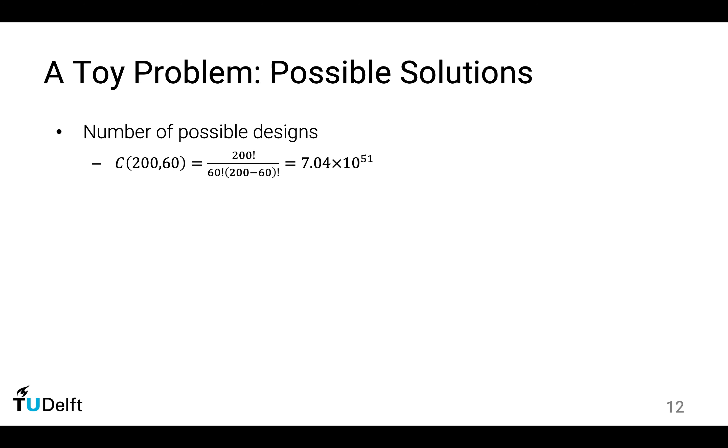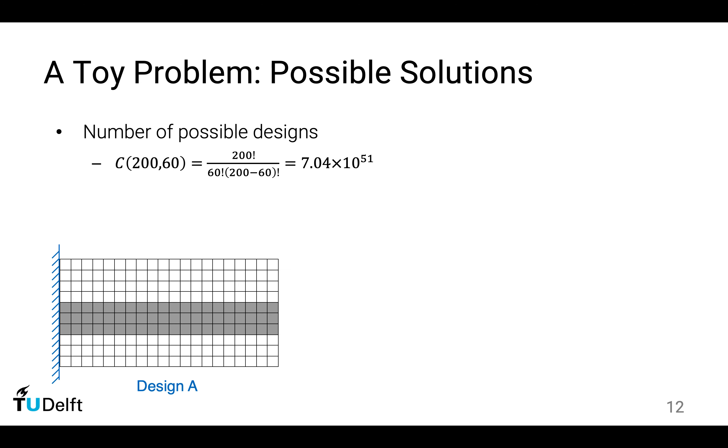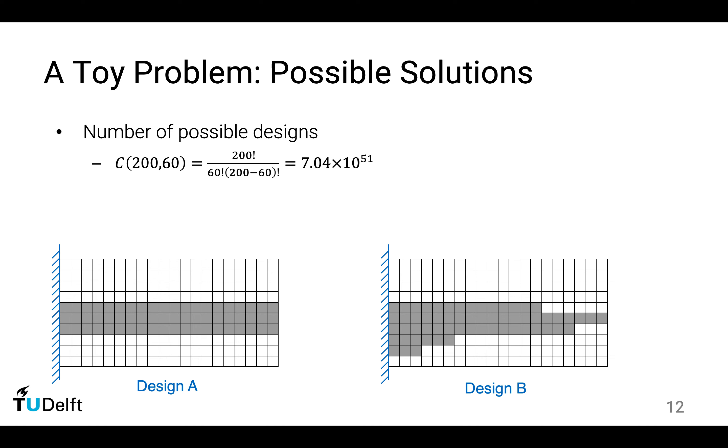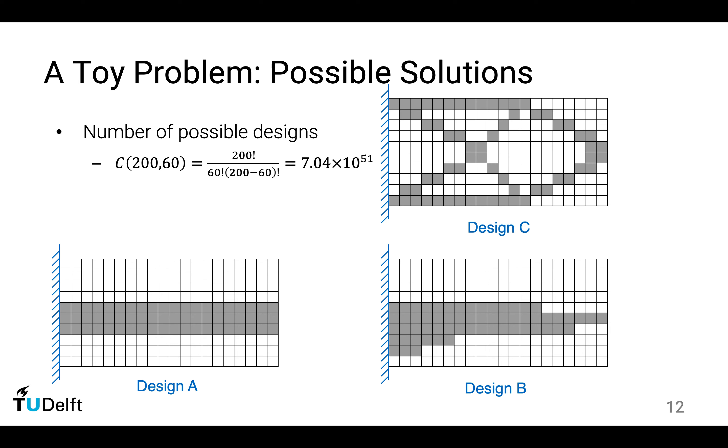So I illustrate three possible solutions. Here we have 60 blocks. We divide it by 20, so we have three solid rows. Let's call it design A. You might think on the left-hand side it is more important for supporting the node, so we place more blocks to the left. Let's call it design B. You might place it randomly by doing some tricks or black magic, and you come up with a design C.